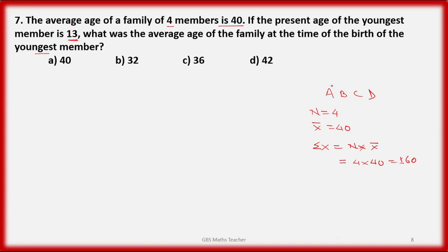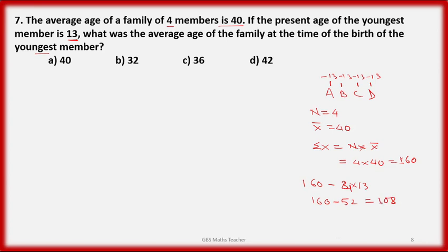108 is the total age for the remaining 3 members 13 years ago, because the youngest member had age 0 at birth. So divide 108 by 3, which equals 36. That is the answer.